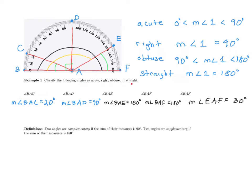Now that we've discussed this terminology, let's add a couple more definitions. Two angles are called complementary if the sum of their measures is 90 degrees. Furthermore, two angles are supplementary if the sum of their measures is 180 degrees. I'll use angle BAC to find a complementary and supplementary angle. The measure of angle BAC is 20 degrees.